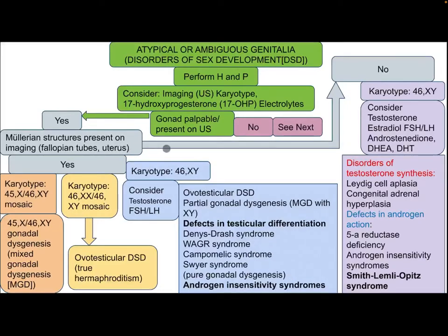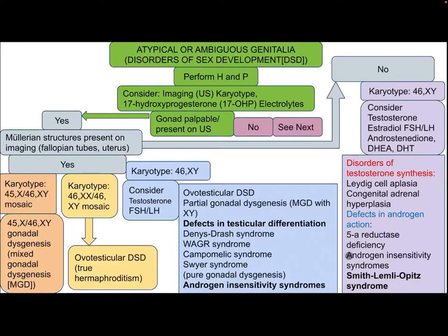If there are no Müllerian structures, proceed according to the karyotype. If it is 46XY, consider testosterone, estradiol, FSH, LH, androstenedione, DHT. The differential diagnosis includes disorder of testosterone synthesis, Leydig cell aplasia, congenital adrenal hyperplasia, defects in androgen action like 5-alpha-reductase deficiency, androgen insensitivity syndrome, and Smith-Lemli-Opitz syndrome.